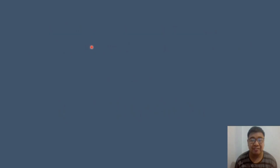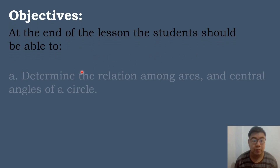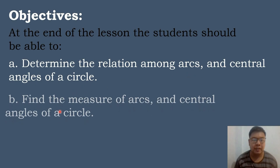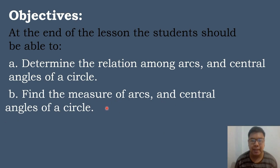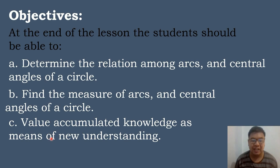Let's have the following objectives in today's topic. At the end of the lesson, the students should be able to: Letter A, determine the relation among arcs and central angles of a circle. Letter B, find the measure of arcs and central angles of a circle. And Letter C, value accumulated knowledge as a means of new understanding.